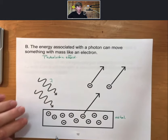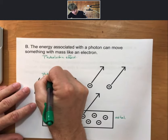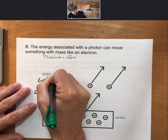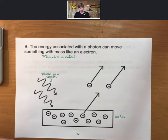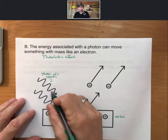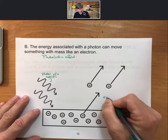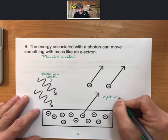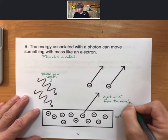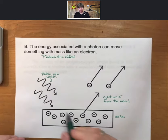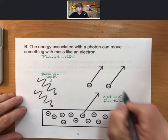So here comes our photon with a specific wavelength. With a specific wavelength, it comes in. If that photon has enough energy, it can eject an electron from the metal. And a couple things about this. So photoelectric effect is this picture here.